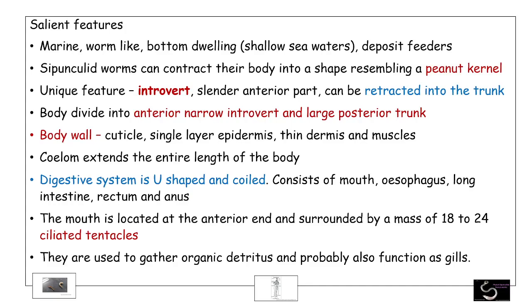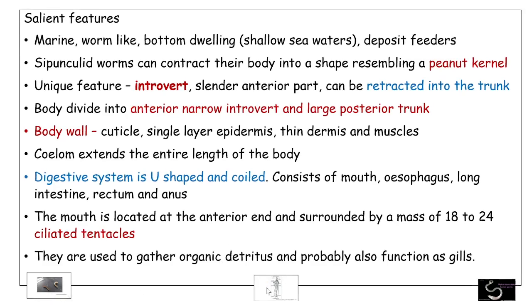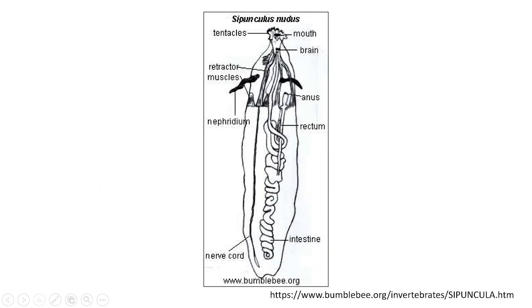Coming to their body wall, they have a cuticle on top of the epidermis, followed by a very thin dermis and muscles, especially the retractile muscles. The coelom extends throughout the body. The digestive system starts with the mouth at the introvert region. It is highly coiled and U-shaped, opening near the anterior end. This transverse section shows the highly coiled, U-shaped alimentary canal of the digestive system.